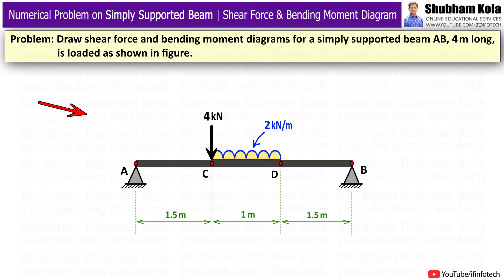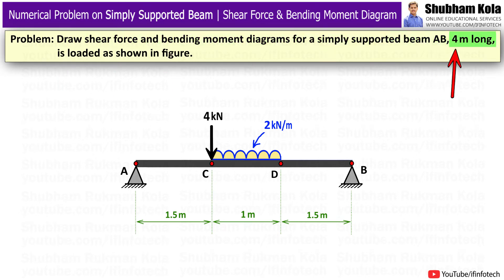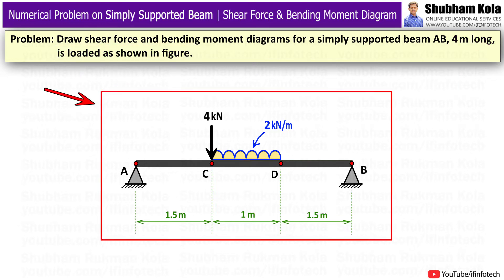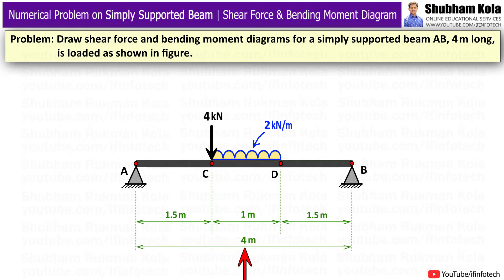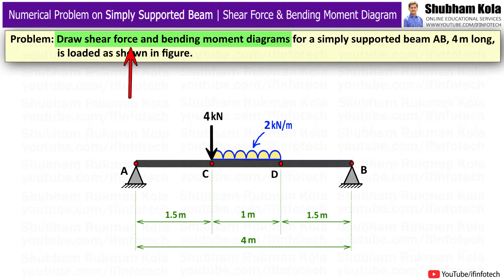In this video, we are going to learn how to draw a shear force diagram and bending moment diagram for a simply supported beam, as shown in the figure. The simply supported beam AB is 4m long, carrying a uniformly distributed load of 2 kN/m over a length of 1 meter, and a point load of 4 kN acting at point C.